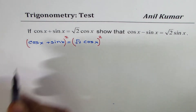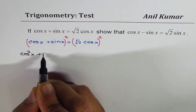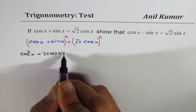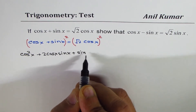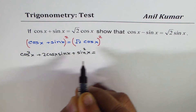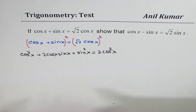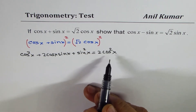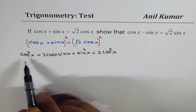We have cos²x plus 2 cos x sin x plus sin²x equals 2 cos²x. Now we can bring all the terms to the right side.